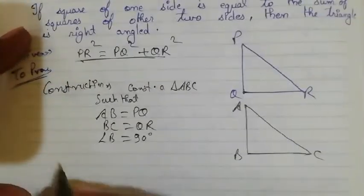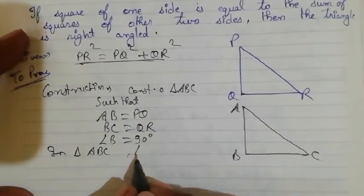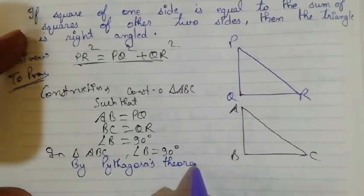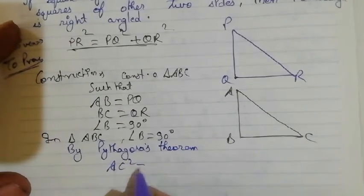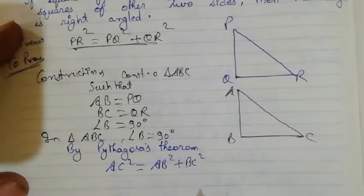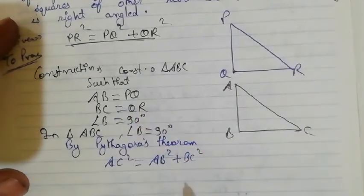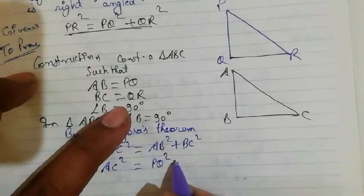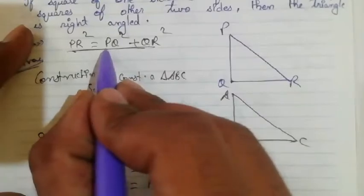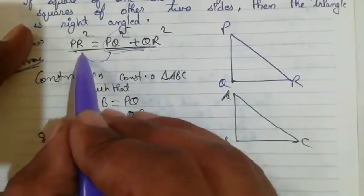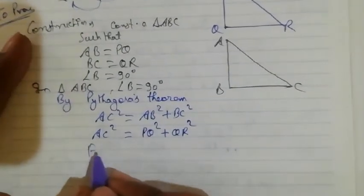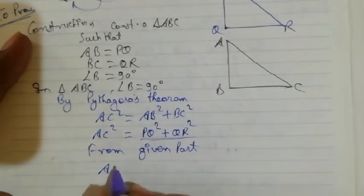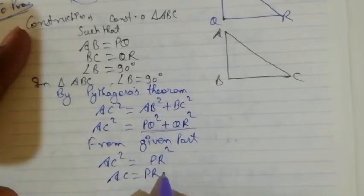In triangle ABC, angle B is equal to 90 degrees. So we can apply the Pythagoras theorem here. By Pythagoras theorem, AC² = AB² + BC². Since AB = PQ and BC = QR, this becomes AC² = PQ² + QR². But from the given condition, PQ² + QR² = PR². Therefore AC² = PR², which gives AC = PR.